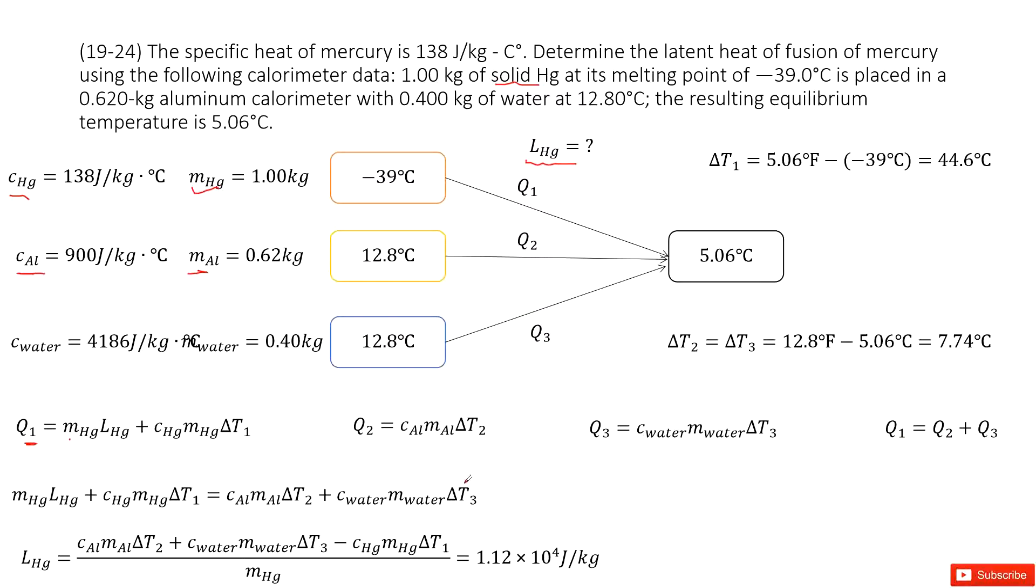And then input all these Q₁, Q₂, Q₃ in these functions. You can solve the equation. Get the fusion constant L_mercury equal to the final answer there. Thank you.